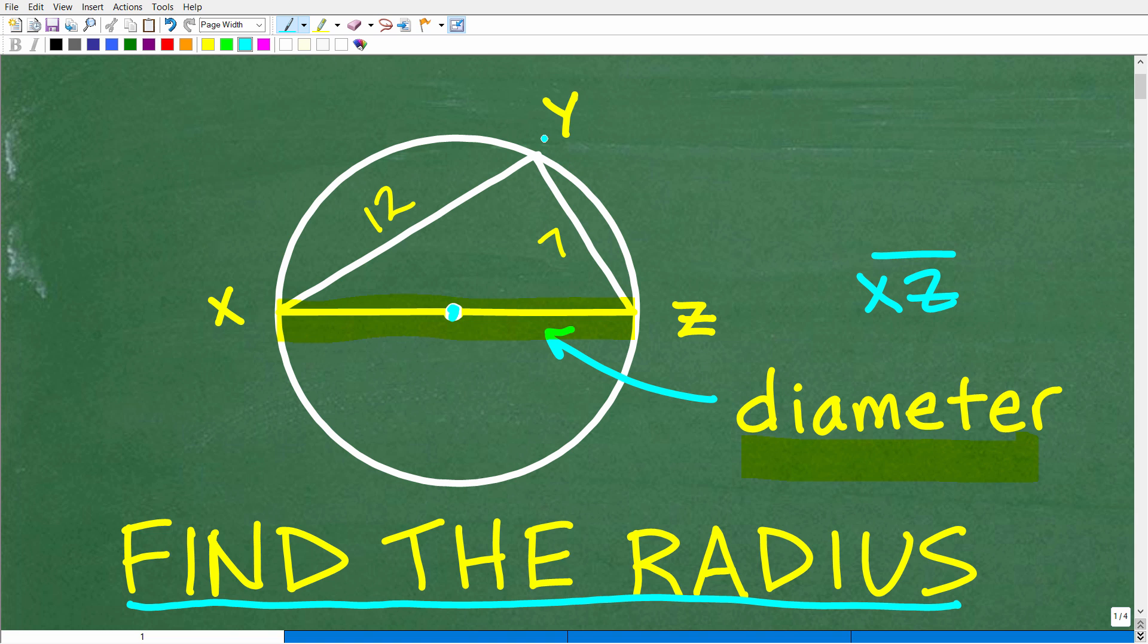And then of course we have some other information. This is a chord in a circle with a length of 12, and this is another chord with a length of 7. Obviously this is forming a triangle. If you don't know what a chord is, I'll explain that in the video, but let's see how well you understand geometry.